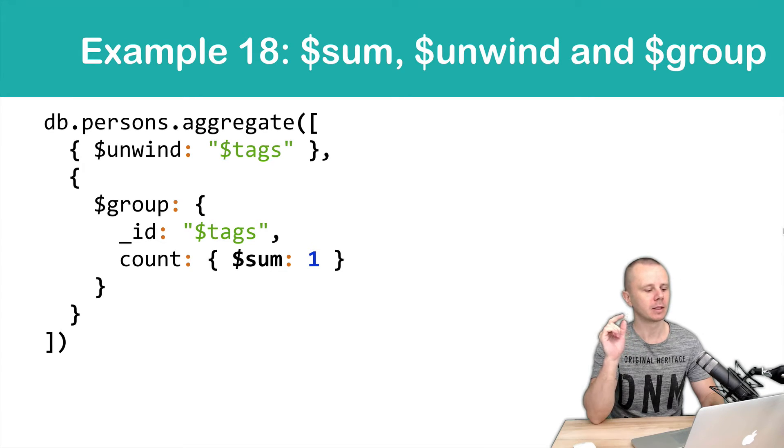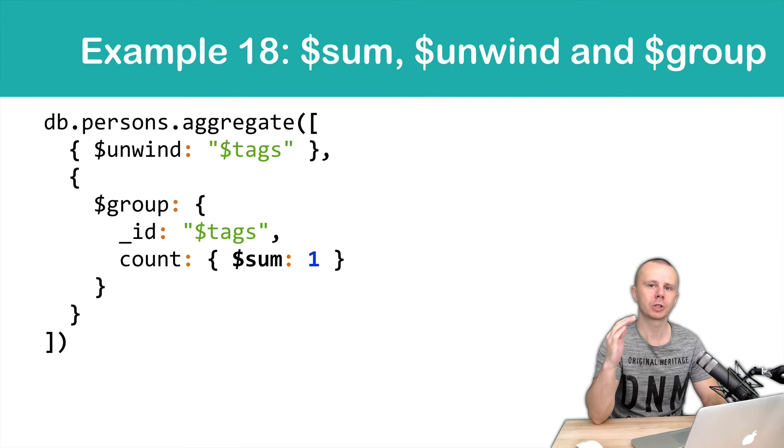In this example we will unwind the tags array and then group by the same tags field. Count here represents the number of occurrences of each tag. Remember that tag in our case is a string.